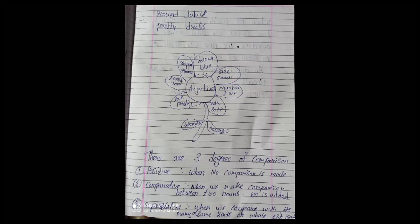So, if you say adjectives are the words that describes shape. Shape can be square, it can be round, it can be triangle, it can be rectangle. So, any shape it can describe.